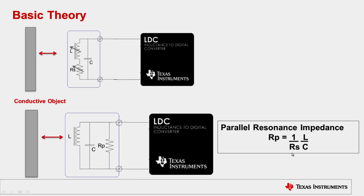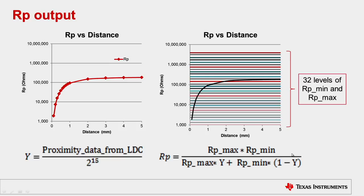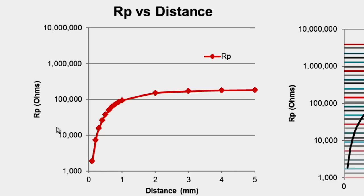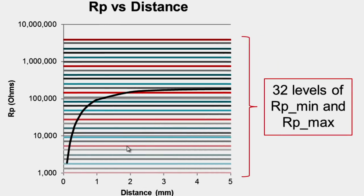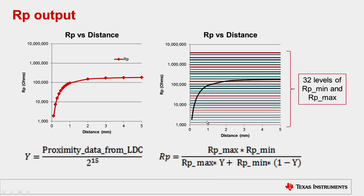Let's see what impact this change has on LDC1000. Here is the variation of the object and here is the change of RP in ohms. What you'll notice is LDC1000 provides you the ability to zoom into a particular range of RP. There are 32 discrete levels of RP and you need to choose a setting that covers the range of change of RP.